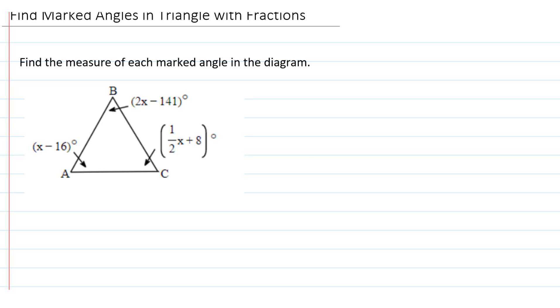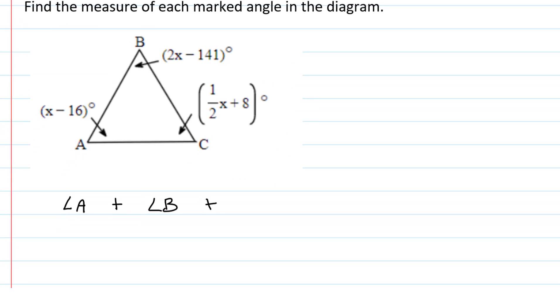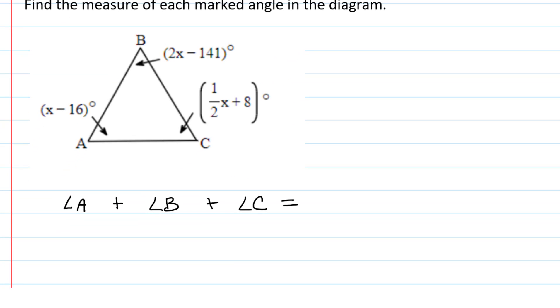The diagram we're given has three angles because it's a triangle, and we know that the interior angles of a triangle always add up to 180 degrees. Whenever you see a diagram with three marked angles inside of a triangle, you're going to use the fact that the sum of the three angles, in this case angle A, angle B, and angle C, is going to add up to 180 degrees.